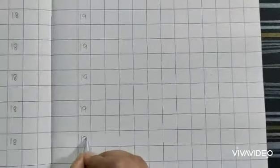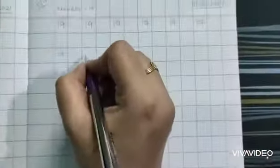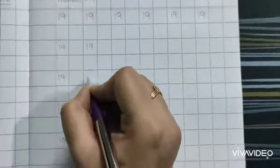1, 9, 19. And whenever you are writing, you have to say the number. That 1, 9, 19.